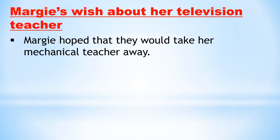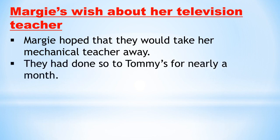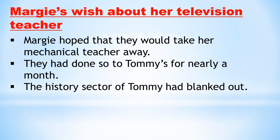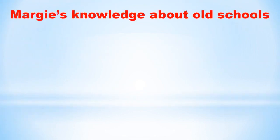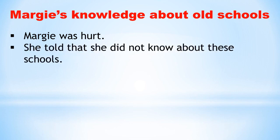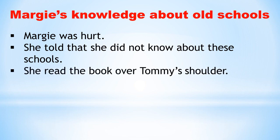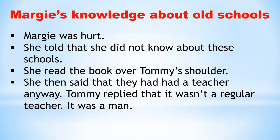Margie hoped they would take her mechanical teacher away, as they had done for Tommy's for nearly a month, because once Tommy's history sector had blanked out. Margie said to Tommy, 'Why would anyone write about school?' and began discussing the old kind of school with him. She was hurt that she did not know about such schools. Reading the book over Tommy's shoulder, she said that at least they had a teacher. Tommy replied that it was not a regular teacher — it was a man.